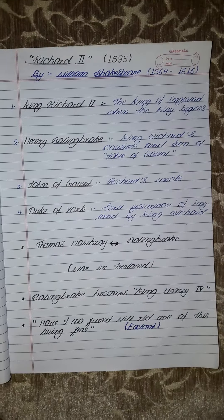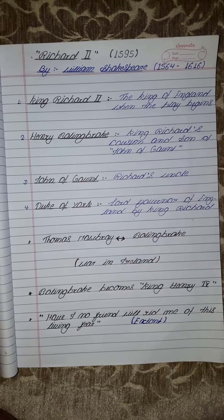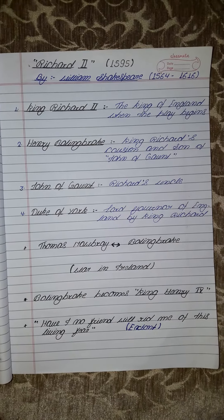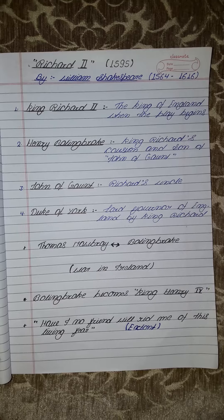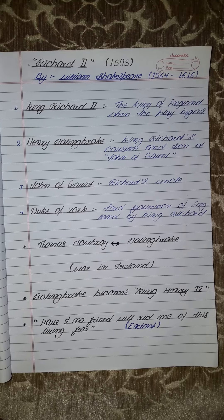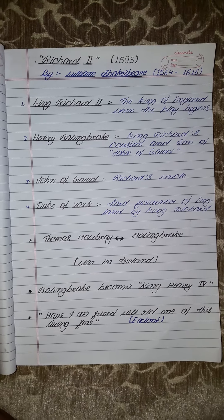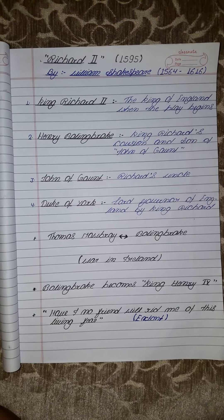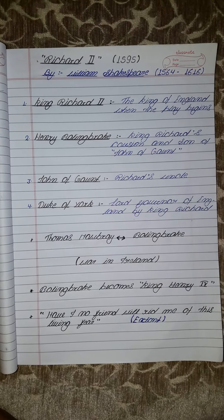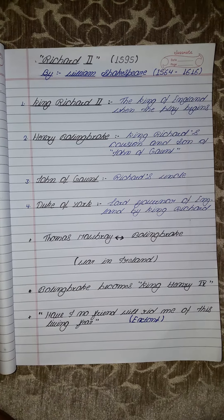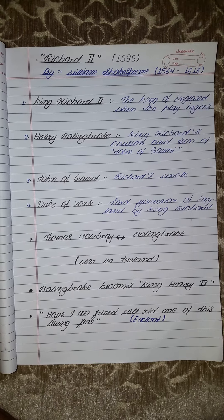Hello everyone, today we'll be seeing Richard II, which is a play by Shakespeare. It was published in the year 1595. The birth and death year of Shakespeare is 1564 and 1616.